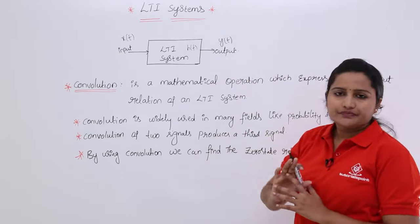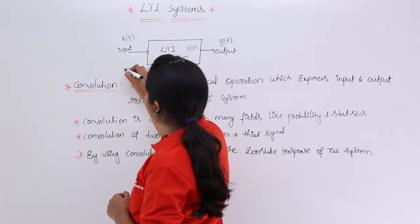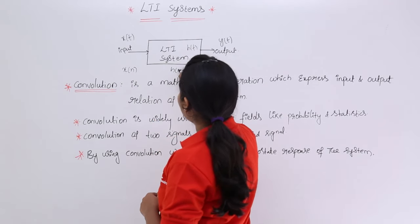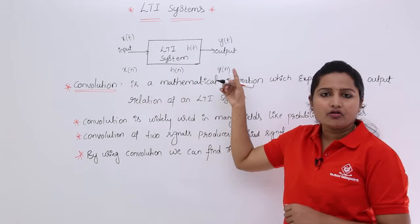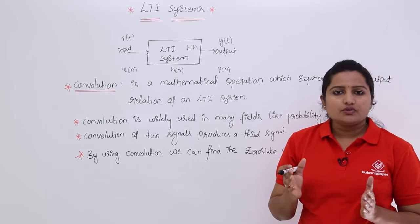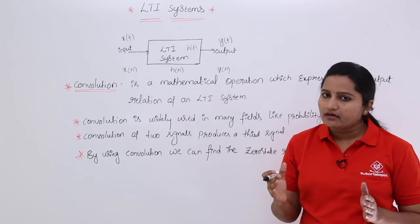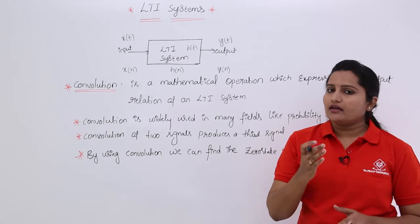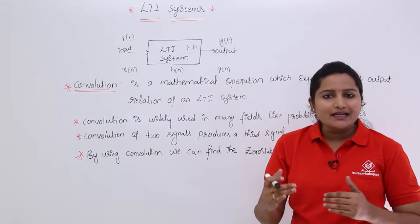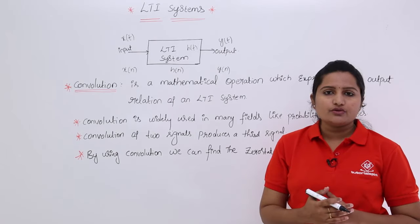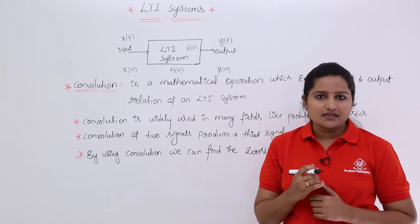There are two types of convolution. If you are working with continuous signals — x(t), h(t), and y(t) as input, impulse response, and output — that is called continuous convolution. If you are working with discrete signals — x(n), h(n), and y(n) — that is called discrete convolution. Now I will give you the equations for both continuous and discrete convolution.